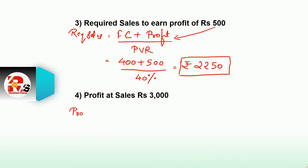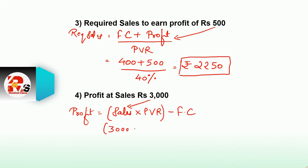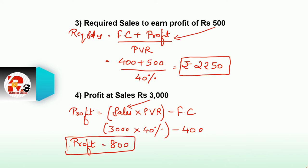Next, profit at a sales of rupees 3000. The profit formula is: sales multiplied by PVR minus fixed cost. Sales is 3000, PVR is 40%, fixed cost is 400. So 3000 multiplied by 40% minus 400 = 1200 minus 400 = rupees 800. That is the profit.